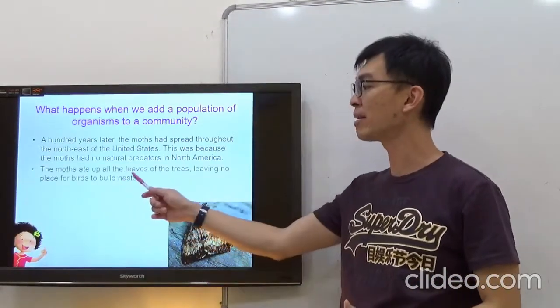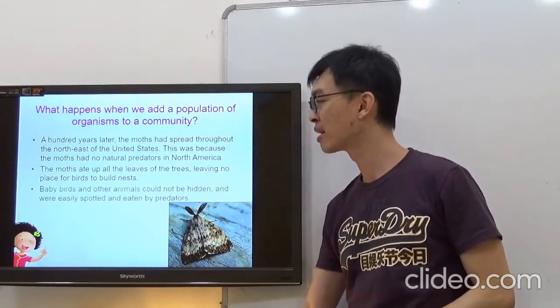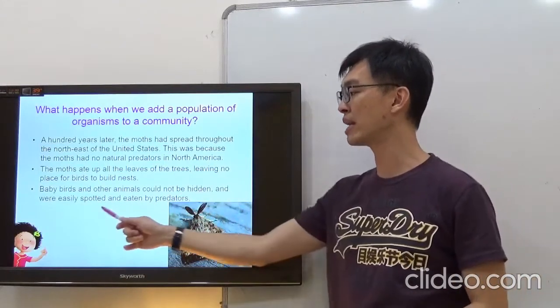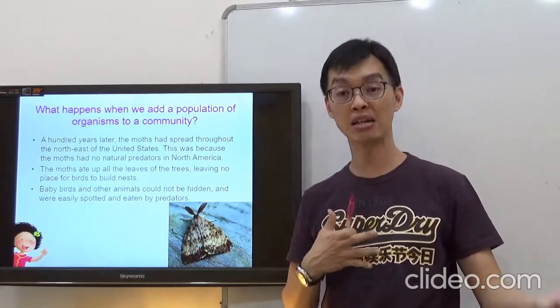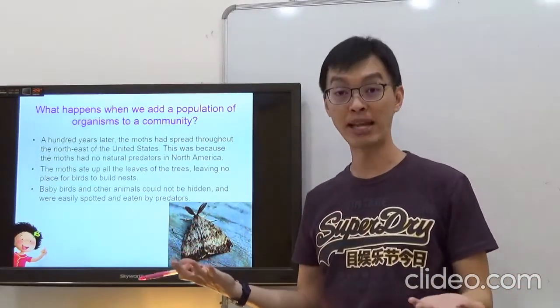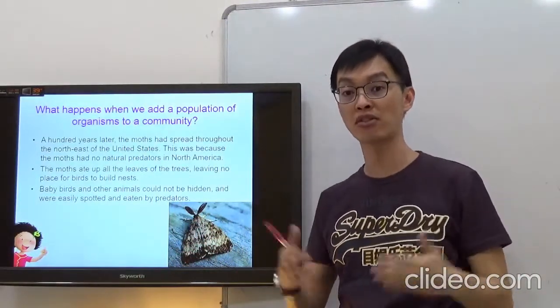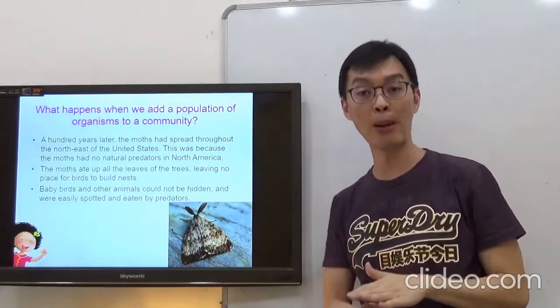The moth ate up all the leaves of the tree, leaving no place for birds to build nests. Baby birds and other animals could not be hidden and they were easily spotted and eaten by predators. You see, by introducing an organism, a Gypsy moth, you upset the whole population size of the rest of the organisms. The bird's population decreases rapidly.